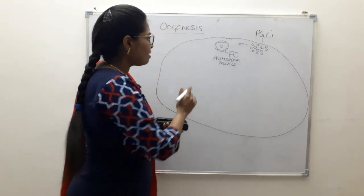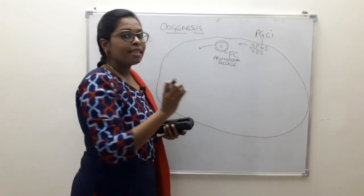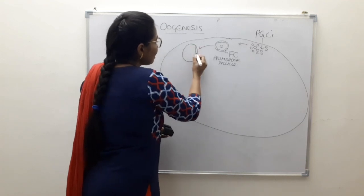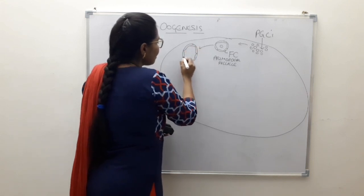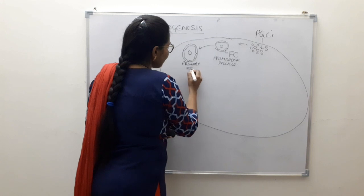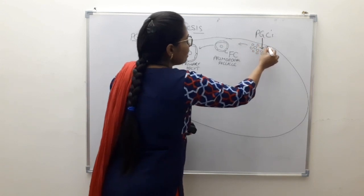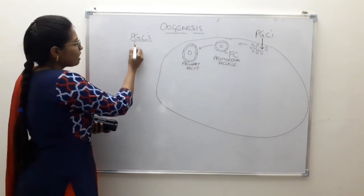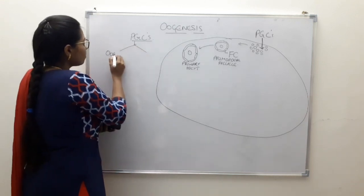Around the 7th month of intrauterine life, these primordial follicles enlarge and are now ready for division. They are now called primary oocytes. The primordial germ cells, once they enter the ovary, undergo mitotic division to form the oogonia, which then give rise to the primary oocyte.